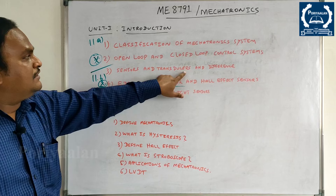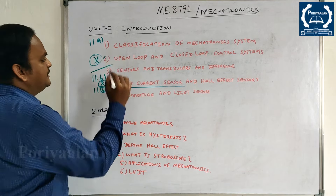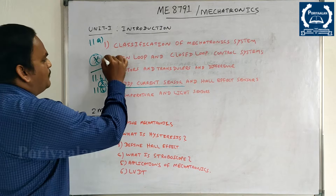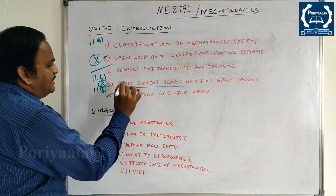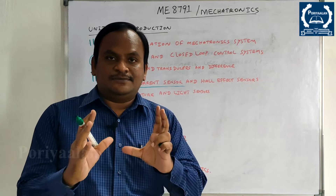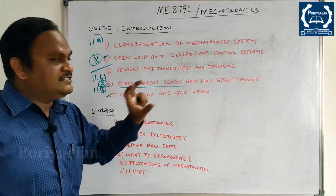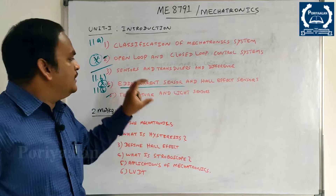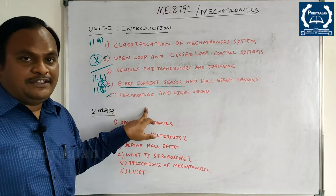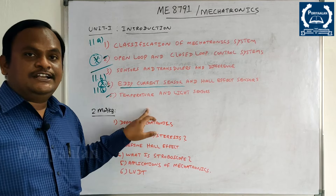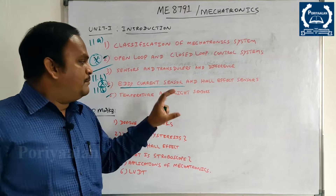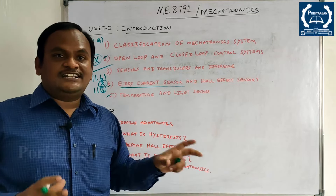If you are learning the open loop, you will learn the sensor. Otherwise, you will learn the temperature and light sensor. If you are convenient with a simple circuit, you will draw the sensor and the light sensor will be simpler. If you are learning the circuit diagram, the diagram will be similar. You will draw the diagram in one page, then learn the applications, advantages, and disadvantages.